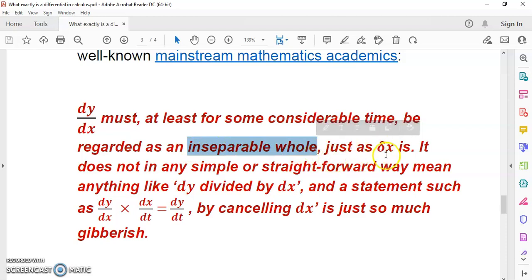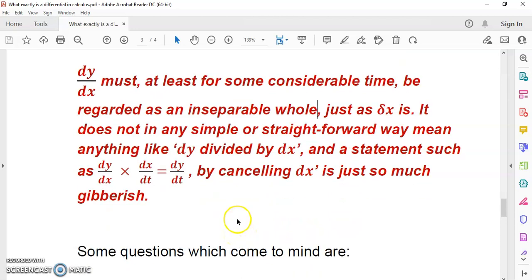It does not in any simple or straightforward way mean anything like dy divided by dx. And a statement such as dy over dx multiplied by dx over dt is equal to dy over dt by cancelling dx is just so much gibberish.